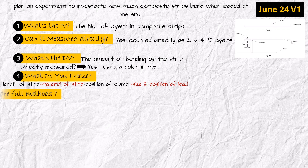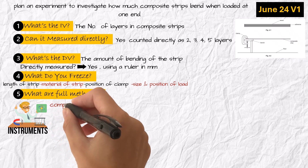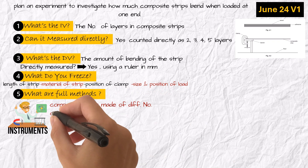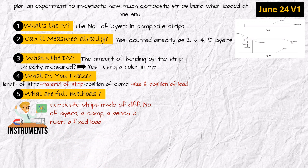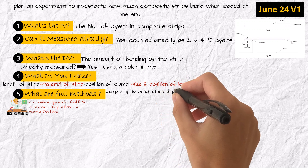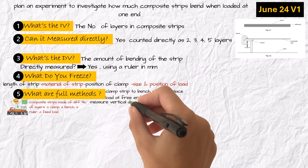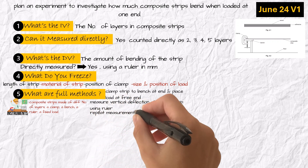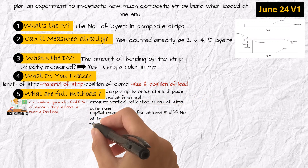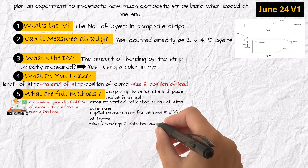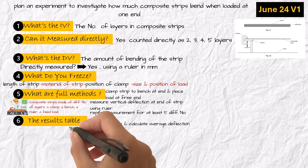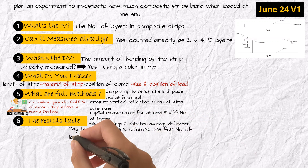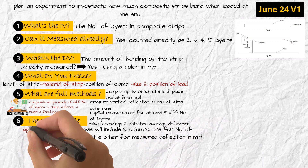Number five: what's the full method, including instruments? To carry out the experiment, I will use composite strips made of different numbers of identical wood layers, a clamp, a bench, a ruler, and a fixed load such as weights. For each trial, I will clamp the strip to the bench at one end and place the load at the free end. I will then measure the vertical deflection at the end of the strip using a ruler. I will repeat for at least five different numbers of layers. For each configuration, I will take three readings and calculate the average deflection.